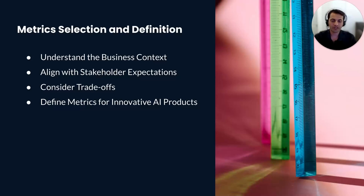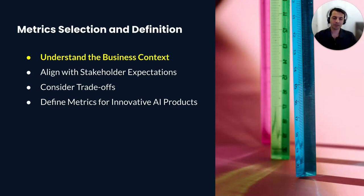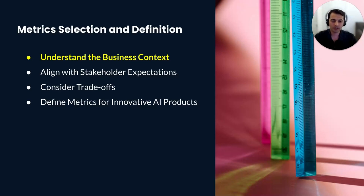Now we have several metrics for our AI product — but what is the process of metrics selection? Before selecting the right metrics, it is crucial to understand the specific business problem and objectives the AI product is supposed to address. Different AI products serve different purposes, so their relevant metrics can be very different. Metrics must be closely tied to the specific task the AI model is performing — for example, precision and recall for classification tasks, or mean absolute error for regression.